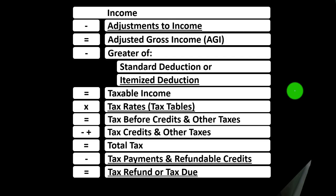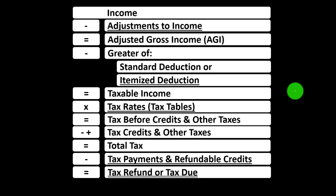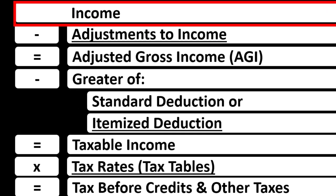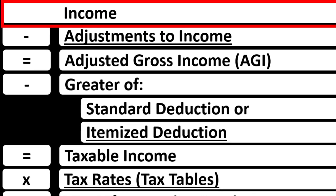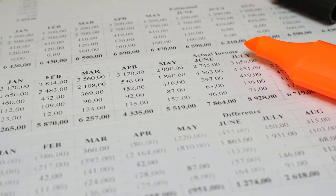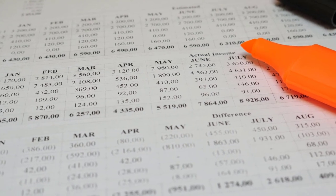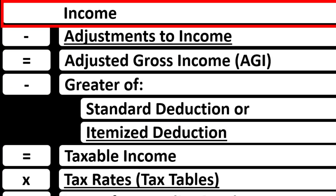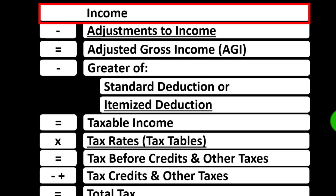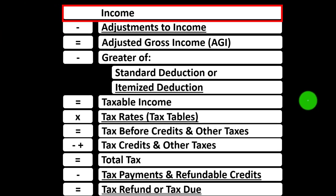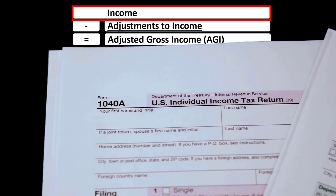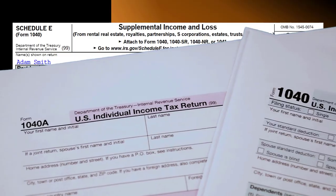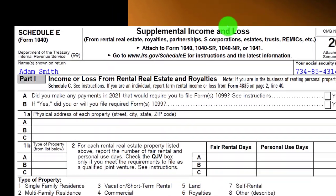The income tax formula focuses on line one income, but we would have a sub-schedule — basically an income statement with income and expenses. Expenses are essentially deductions. The net then rolls into line one income of the income tax formula and eventually page one of Form 1040. This is the Schedule E.